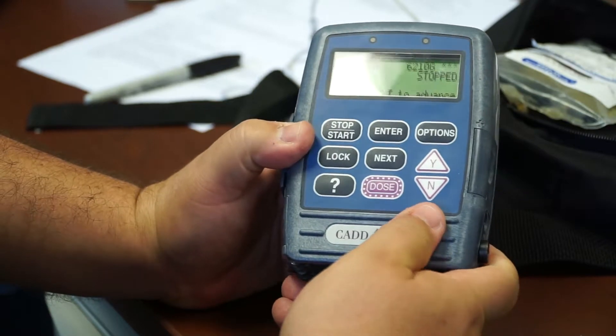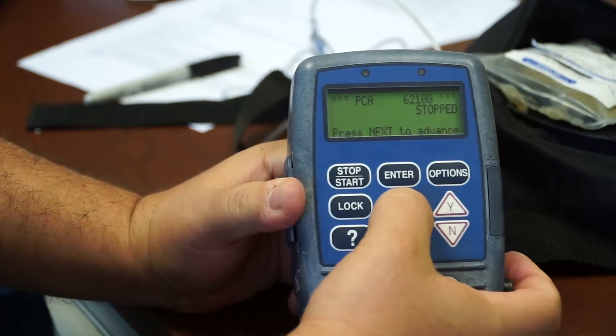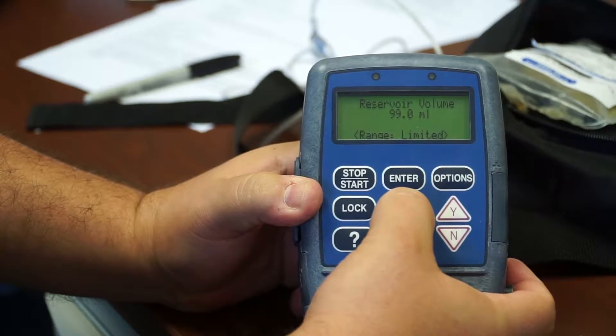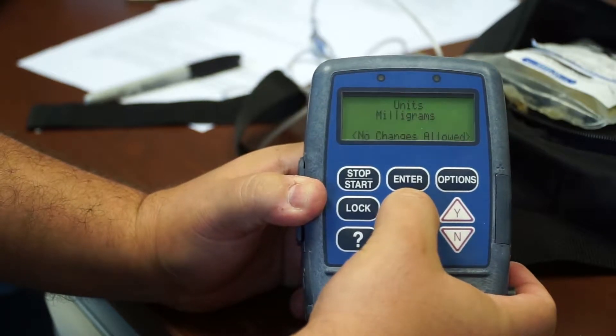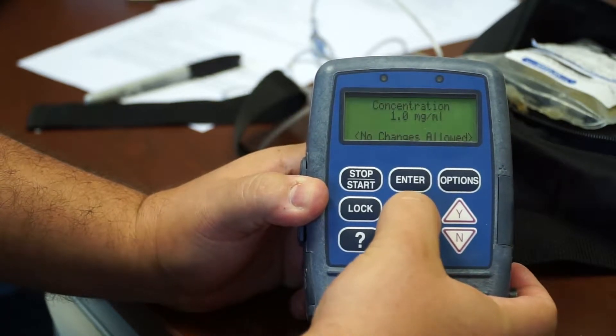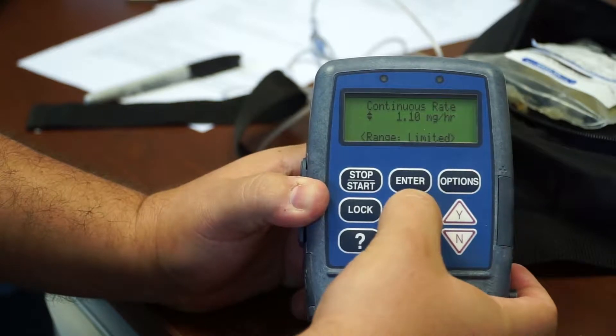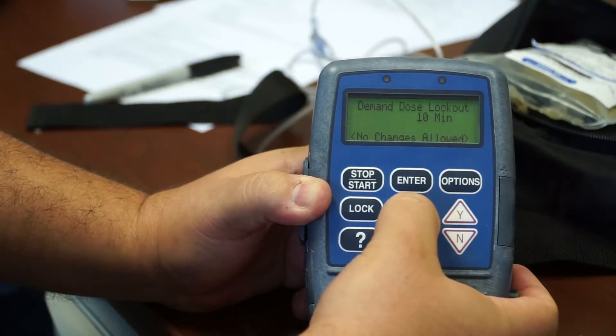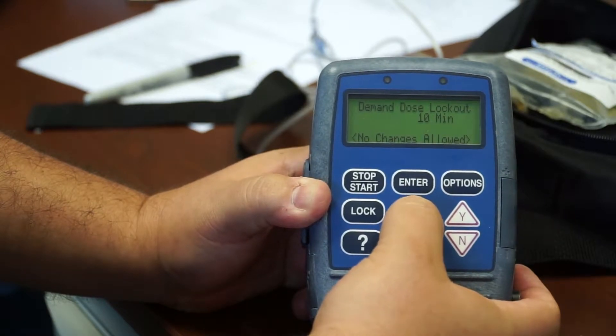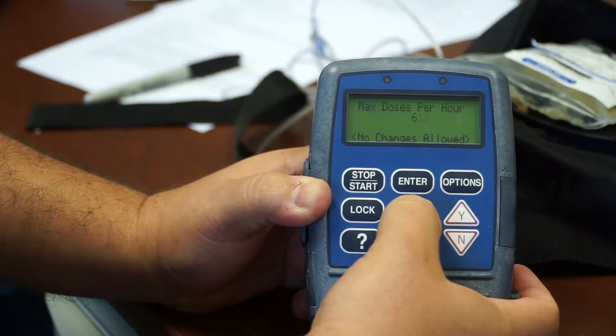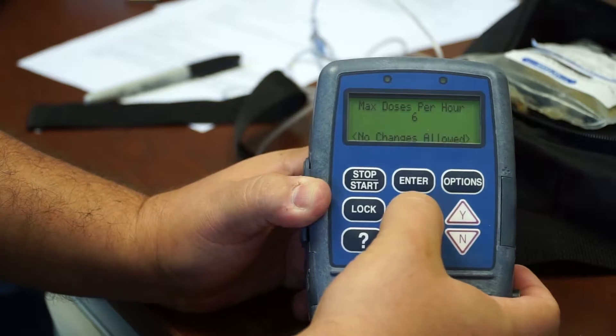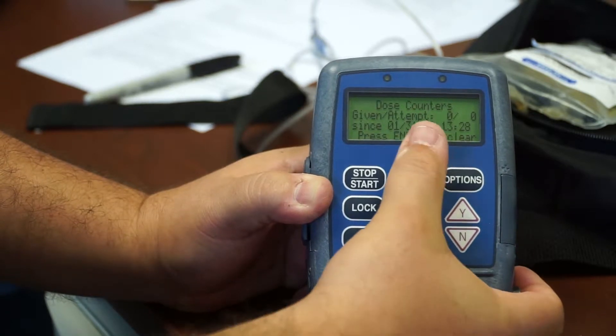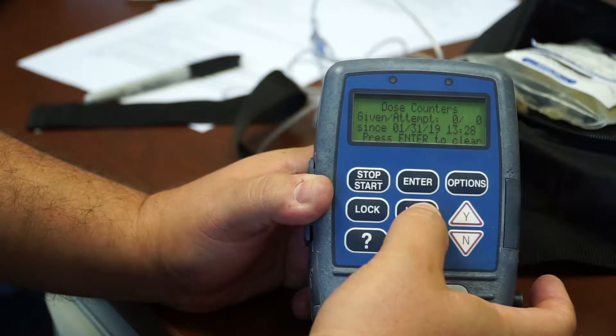So to look at the settings, you would click on next. And you could scroll through by continuously pressing next to see what your cassette settings are. See, it's your concentration, your rate, your demand dosage, the demand dosage lockout time, which is 10 minutes on this one, max dosages per hour.